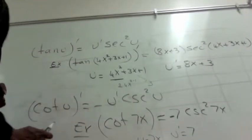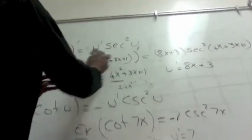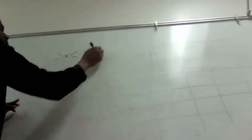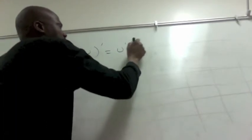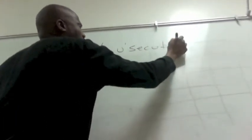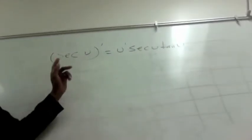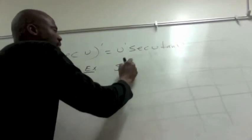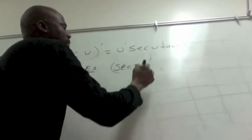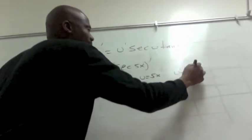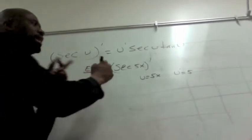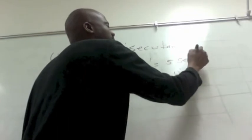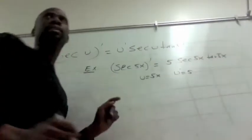The next one will be secant of u. Secant of u prime is u prime secant of u tangent of u. Example: secant of 5x. Here u is 5x and u prime is just 5, since the derivative of 5x is 5. So secant of 5x prime equals 5 secant of 5x tangent of 5x.